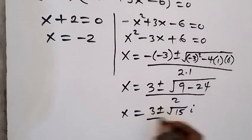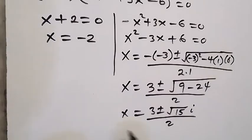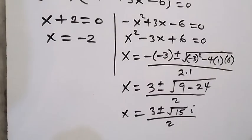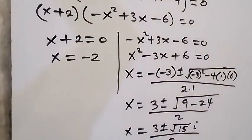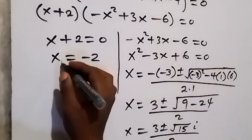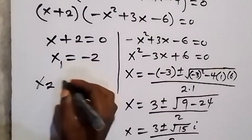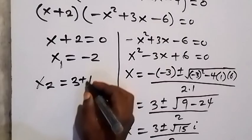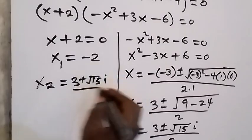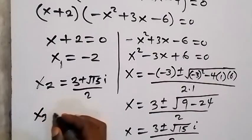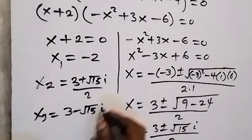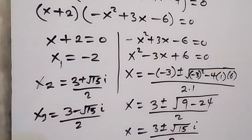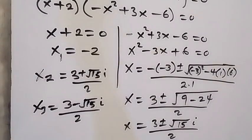These are two complex (imaginary) solutions. So in summary, the three solutions are: x equals minus 2 as the first solution; x equals (3 plus root 15 i) over 2 as the second solution; and x equals (3 minus root 15 i) over 2 as the third solution. And here we have come to the end of the problem.